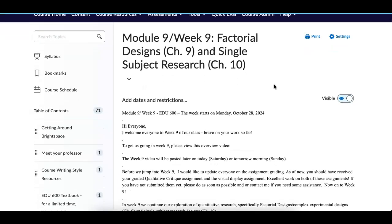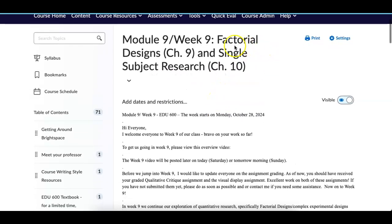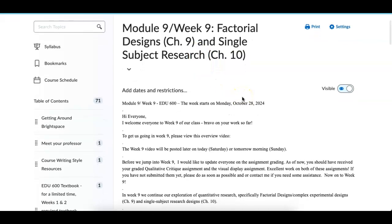And so this week, in week number nine, we have two different types of research: factorial designs and then single-subject research. And I'll let you read chapter nine for really a snapshot. This type of research gets at the variables.